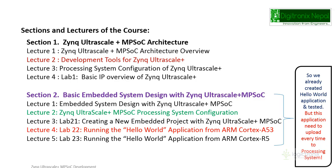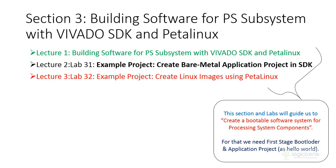The board's processing subsystem will boot the necessary files from the SD card — that is, the First Stage Bootloader and hello application. Section 3 guides us to create a bootable software system that needs to have some user application and a First Stage Bootloader, or different other methodologies. Initially, we have an overview of building software for the PS subsystem with Vivado SDK and PetaLinux.